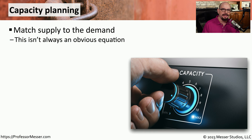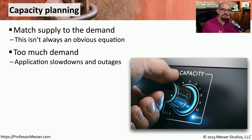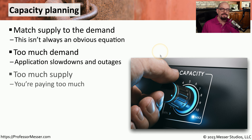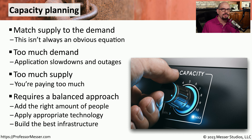Trying to predict how much capacity you might need for any particular service is an ongoing challenge in information technology. We obviously have a demand for a particular service, and we need to be sure that we're able to supply everything we need to meet that demand. If we make the mistake of not providing enough resources, then we have too much demand, and you ultimately will have application slowdowns and potentially outages. If you've built out an infrastructure with too much supply, then you've spent more money than you've needed. The key, of course, is to create just the right amount of supply so that you can handle the demand.